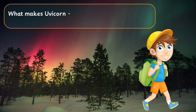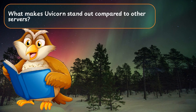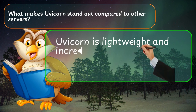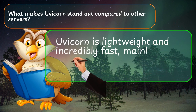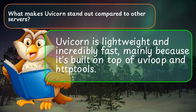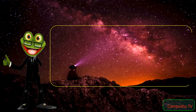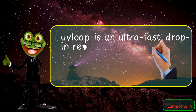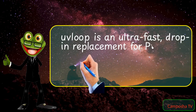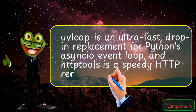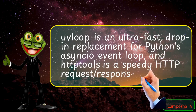What makes Uvicorn stand out compared to other servers? Uvicorn is lightweight and incredibly fast, mainly because it's built on top of uvloop and httptools. uvloop is an ultra-fast, drop-in replacement for Python's standard event loop, and httptools is a speedy HTTP request/response parser.